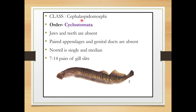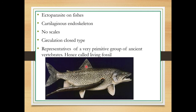Under class Cephalaspidomorphi, there is one order called Cyclostomata. 'Cyclo' means round and 'stomata' means opening, so it simply means round mouth or round opening. Jaws and teeth are absent. Paired appendages and genital tufts are absent. The nostril is single and median. Seven to fourteen pairs of gills are present. They are mostly ectoparasitic on fishes.